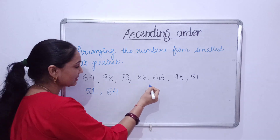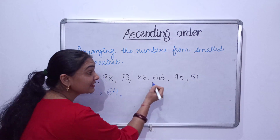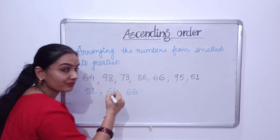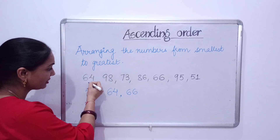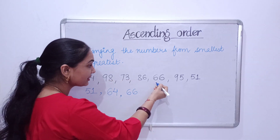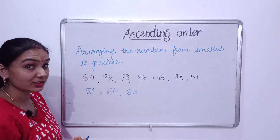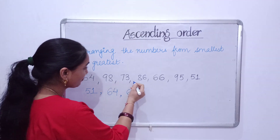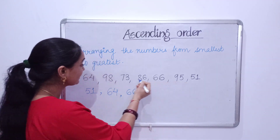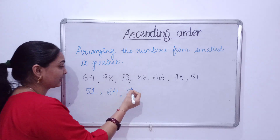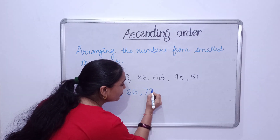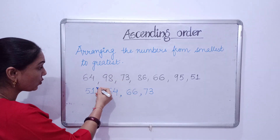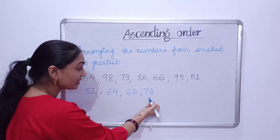Which one is next? It is sixty-six. Then after sixty-six, which will be the next number? It is seventy-three. So we'll write seventy-three.